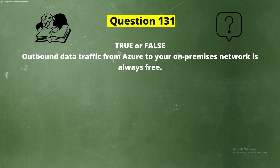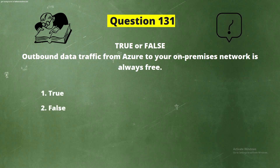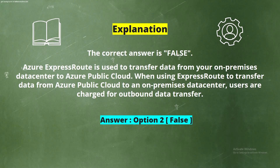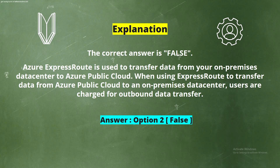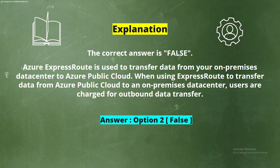Question 131. True or False? Outbound data traffic from Azure to your on-premises network is always free. The options are Option 1, True, and Option 2, False. The correct answer is Option 2, False. Azure ExpressRoute is used to transfer data from an on-premises data center to Azure public cloud. When using ExpressRoute to transfer data from Azure public cloud to an on-premises data center, users are charged for outbound data transfer.